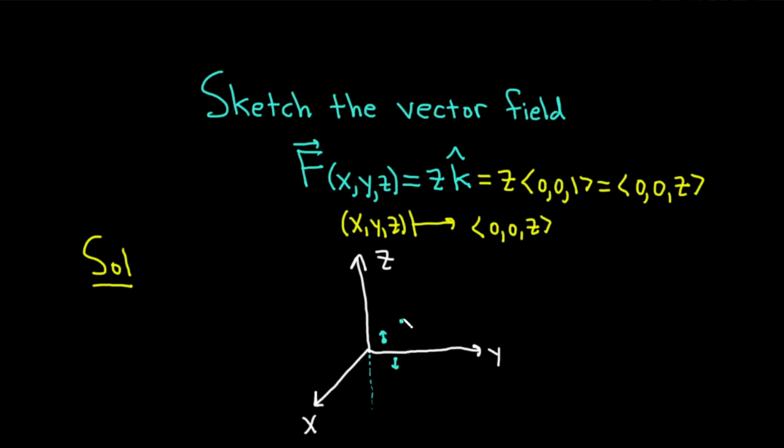Whereas if I pick one up here, the z-coordinate is a little bit bigger, and it's positive. So it's going to go up a little bit higher. The magnitude is a little bit bigger. Likewise up here, it's a little bit bigger.